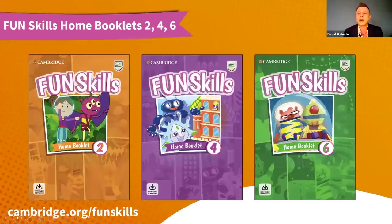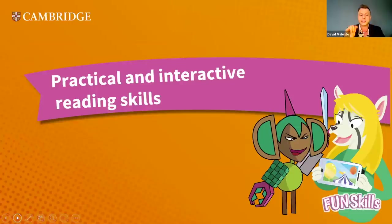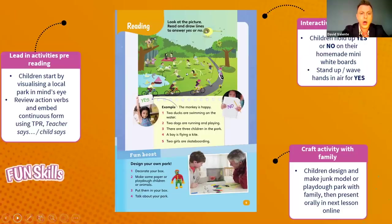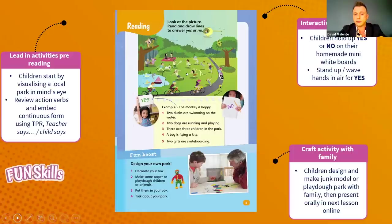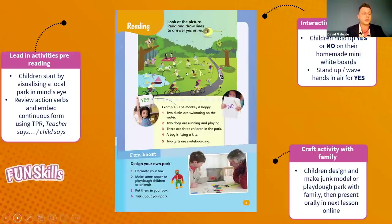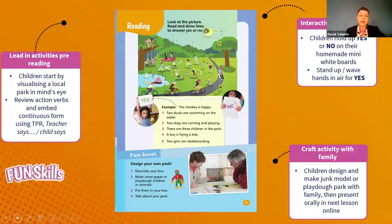Let's start with reading. Remember: make it practical and make it interactive. We're going to look first at Home Booklet 2, which is pre-A1 Starters. Here's a reading activity called 'All Around the Park.' Children are developing their visual literacy by looking at a picture and reading five sentences, deciding yes or no — a child-friendly true/false style reading exercise. We want to make this practical and interactive, so let's think about what we can do as a lead-in, pre-reading activity in an online lesson.